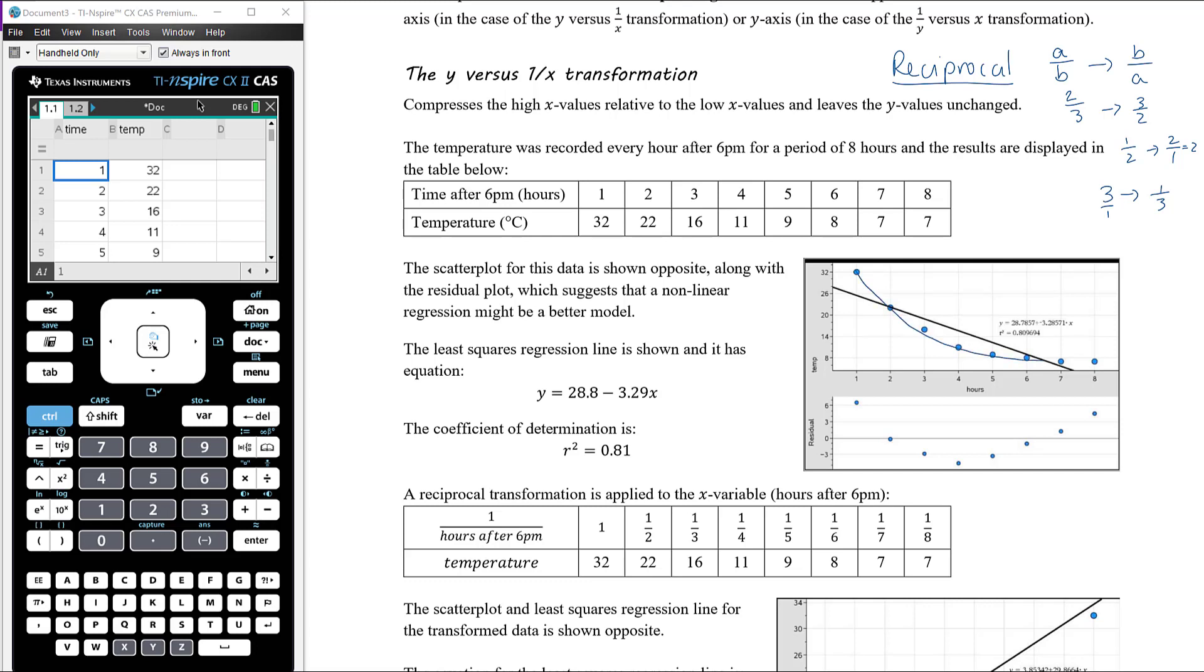We can see clearly from the data non-linear form. The residual plot is certainly confirming that a linear model was possibly not the best model; we have a clear curve in the residual plot. The least squares regression line equation to three significant figures is y equals 28.8 minus 3.29x and the coefficient of determination is r squared equals 0.81. It's still strong correlation, but we can see it's not the best model. We must be able to get a better model with a stronger correlation than this.